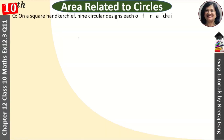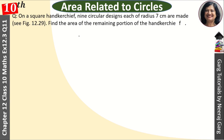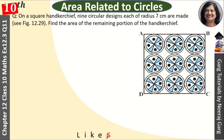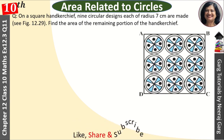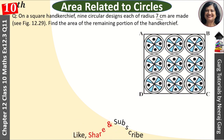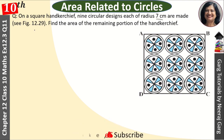Hi, this is Neeraz Karg and you are watching area related to circles. On a square handkerchief, 9 circular designs each of radius 7 cm are drawn. See figure 12.29. Find the area of the remaining portion of the handkerchief. This is the design given by the handkerchief.